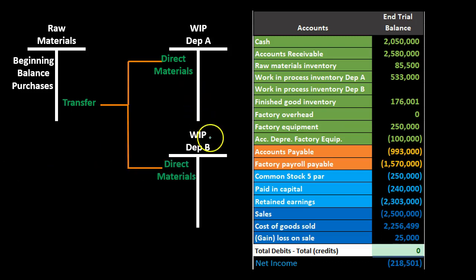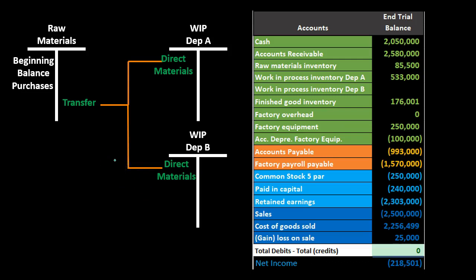However, some materials go directly to Department B, such as packaging materials like wax paper needed in the packaging department. So we will have direct materials going to both Department A and Department B. The materials going to Department A represent the bulk — the main inputs being converted — while materials going to Department B are secondary items like packaging.